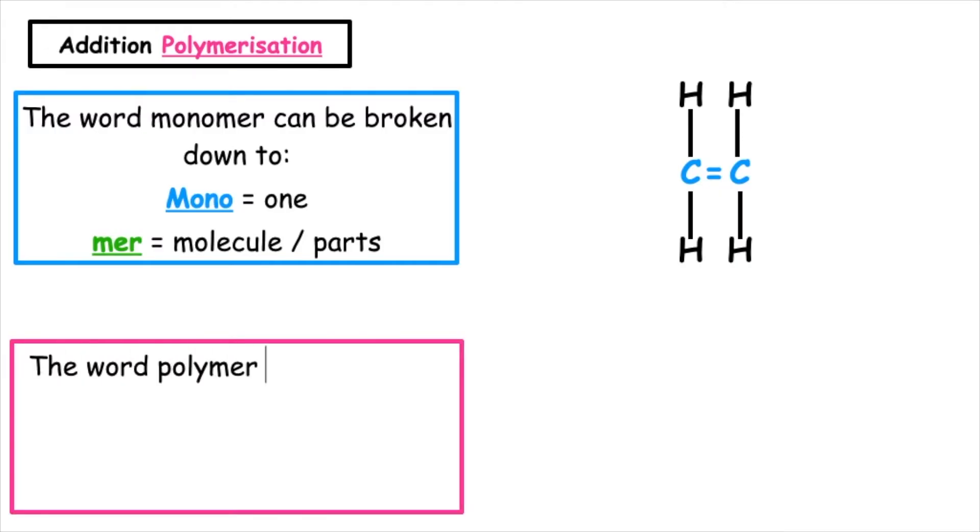The word polymer can be broken down to poly, meaning many, and mer, meaning molecules or parts. This is where we join many monomer units together to form one long polymer chain.